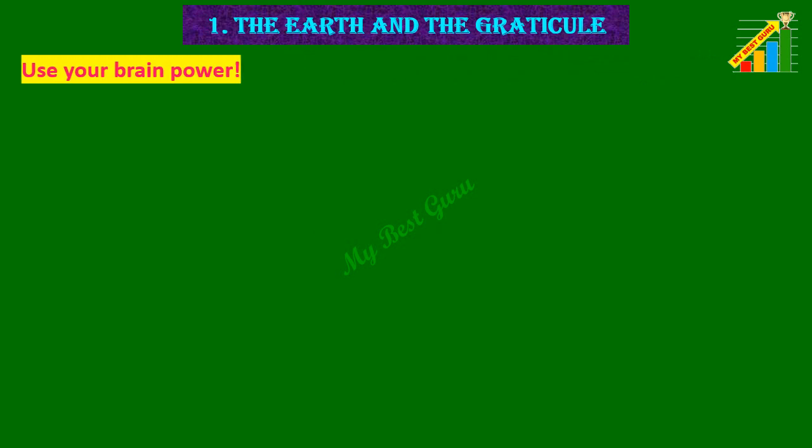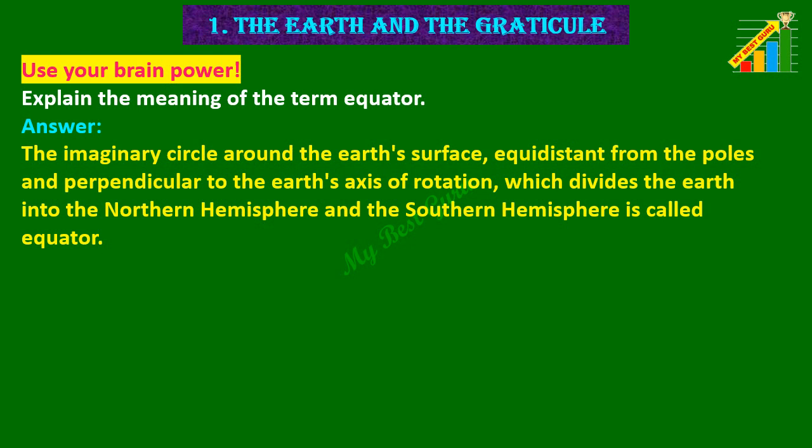Use your brain power. Explain the meaning of the term equator. Answer: The imaginary circle around the earth's surface equidistant from the poles and perpendicular to the earth's axis of rotation, which divides the earth into the northern hemisphere and the southern hemisphere.